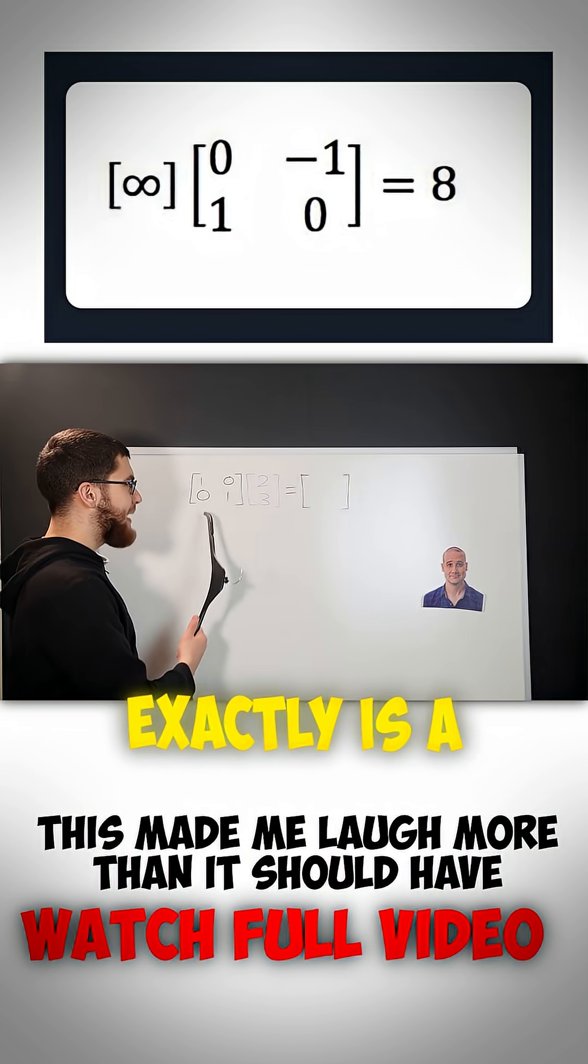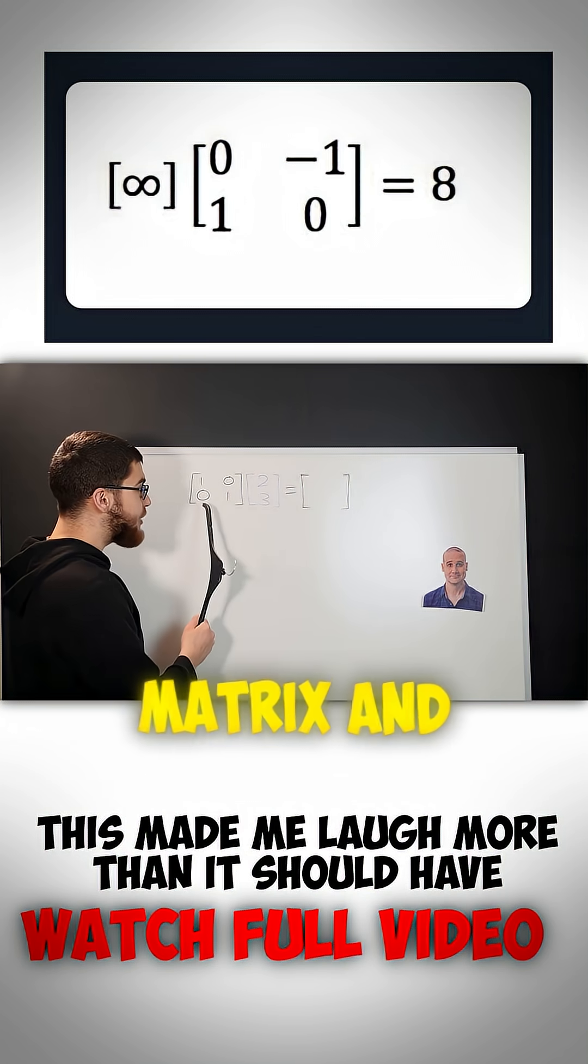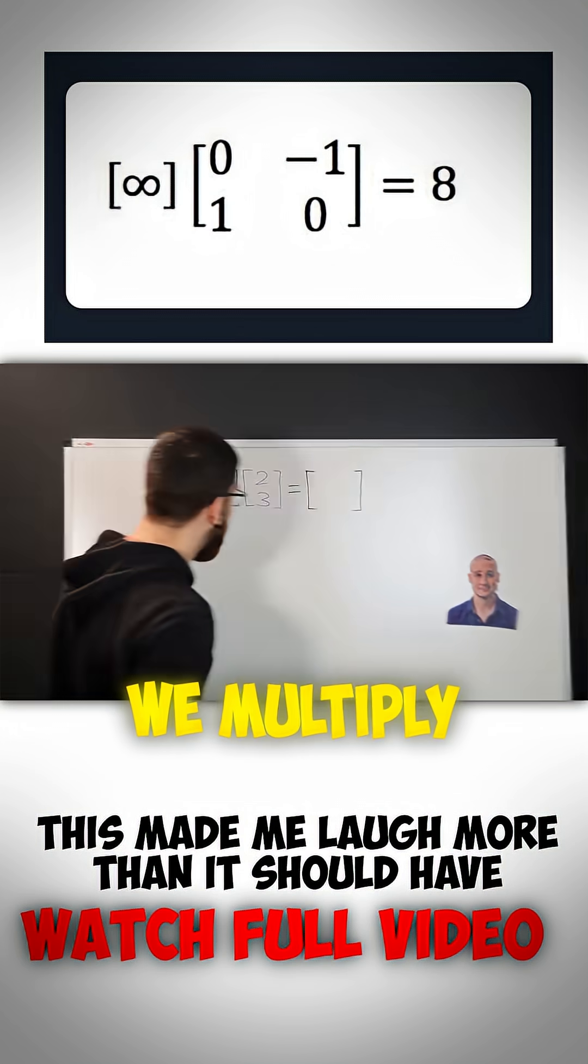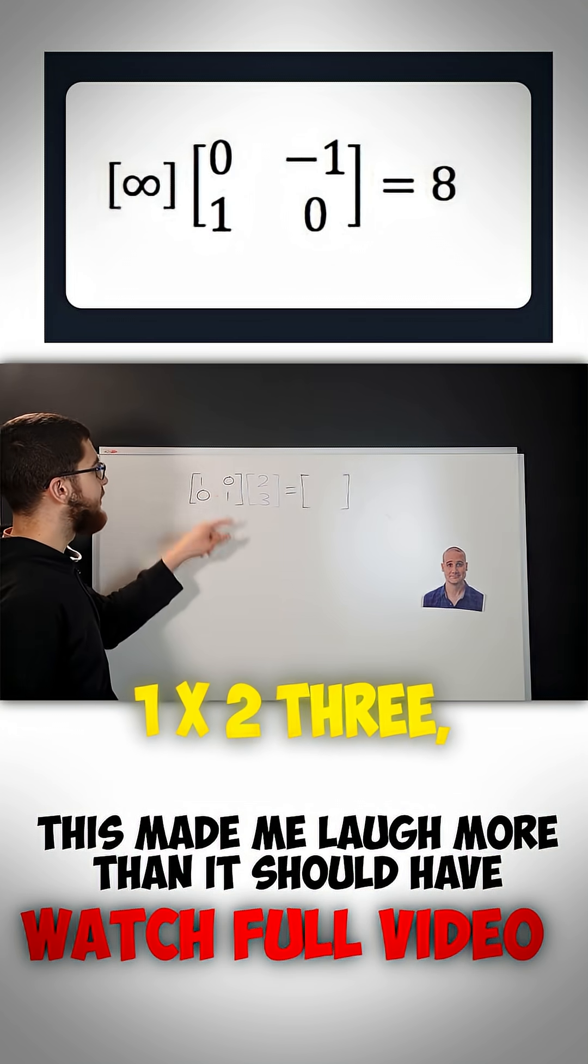But what exactly is a matrix? Well, we can take a matrix and multiply it by a vector to get another vector. So if we multiply 1, 0, 0, 1 by 2, 3,